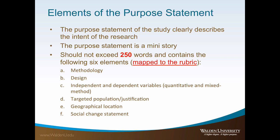The DBA rubric indicates the purpose statement should not exceed 250 words. These 250 words should comprise the following six elements: the research method, the research design, the independent and dependent variables for quantitative and mixed method studies only, the specific population and justification for targeting this population, the geographical location, and the social change statement.